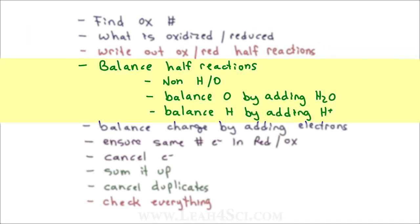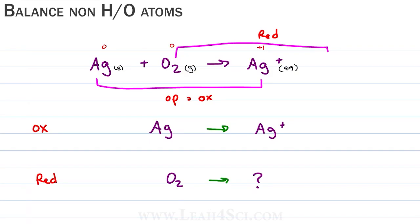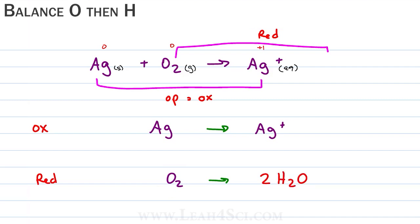Now we go into balancing, starting with the oxidation half reaction. We balance the non-H's and O's — we have one Ag on the left and one Ag on the right, so the atoms are balanced; we have no hydrogen and no oxygen. For the reduction half reaction, the only atom present is oxygen, so there are no non-H's and O's to balance. Next we balance oxygen using water. We have two oxygens on the left in the O2 molecule, so we add two molecules of H2O to the right. Now the oxygens are balanced.